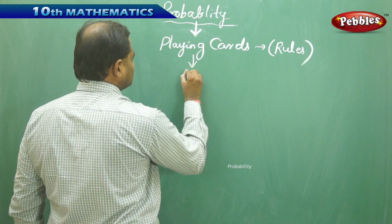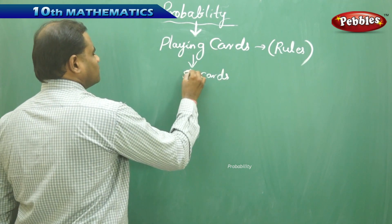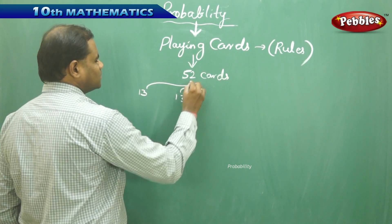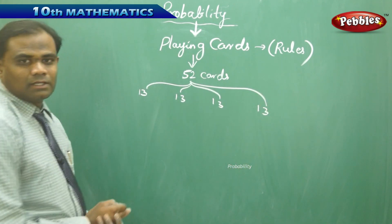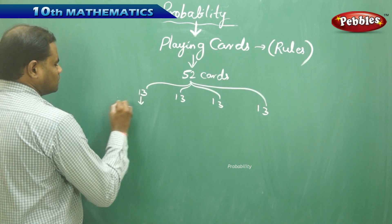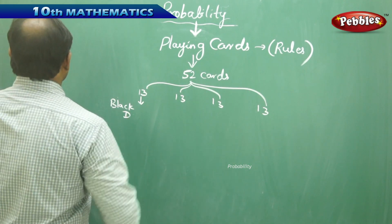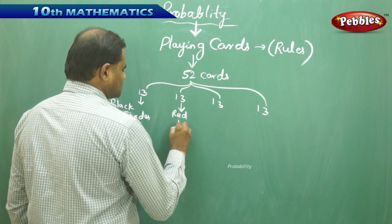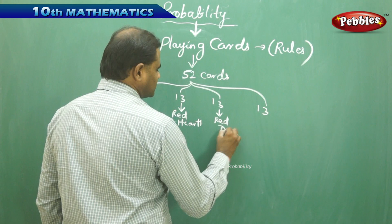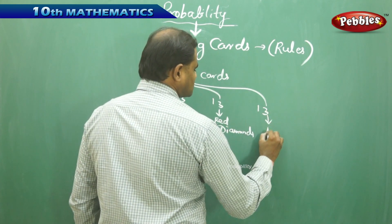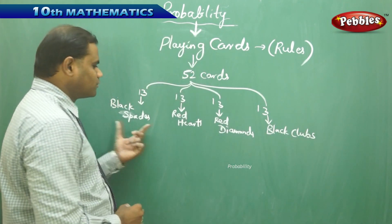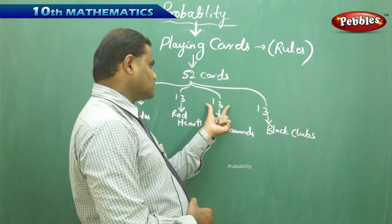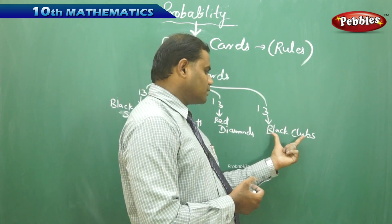Totally there are 52 cards in the game of playing cards, and these 52 cards are divided into four groups of 13 each. Each group of 13 belongs to one suit: black spades, red hearts, red diamonds, and black clubs. So you have 4 different types of cards — black spades (13), red hearts (13), red diamonds (13), and black clubs (13) — out of 52 total.